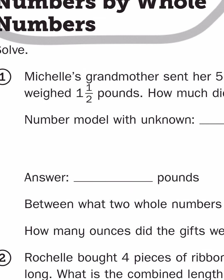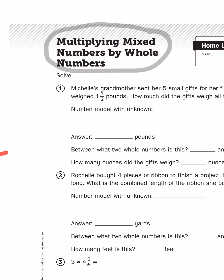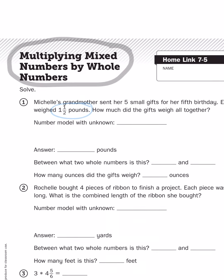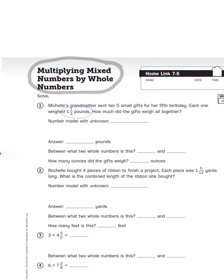In this first problem about gifts being sent by Michelle's grandmother, we have a mixed number that is one and a half, representing one and a half pounds. What is one and a half? Well, it's just one and a half combined in a convenient package. So when we go to break down this problem, we're going to look at one and a half in the same way that we looked at 67. But I'm getting ahead of myself. Let's actually read this story problem. It says, Michelle's grandmother sent her five small gifts for her fifth birthday. Oh, there's a theme there. Each one weighed a pound and a half or one and a half pounds. How much did the gifts weigh all together?